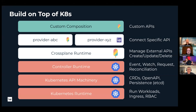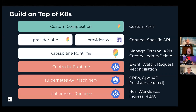Looking at the tech stack, we're building upon Kubernetes — the Kubernetes runtime to run workloads, the machinery for CRDs and open persistence, and the controller runtime for reconciliation. We're building on this awesome foundation of a control plane runtime, and Crossplane sits on top of it, making external APIs available to manage your infrastructure.